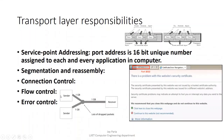Other responsibilities of the transport layer include connection control, flow control, and error control. Flow control and error control were also discussed for the data link layer — they are responsibilities of both layers. So flow control and error control are responsibilities of both the transport layer and the data link layer.